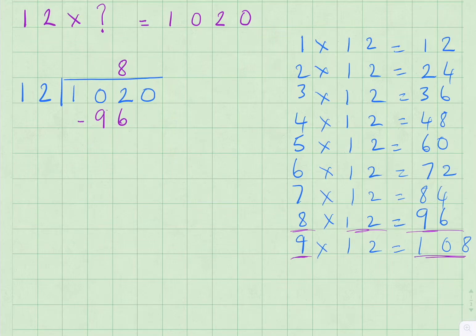So we now need to take 96 away from 102 to find out what's left over when you've put 8 twelves into 102. 2 take away 6 we can't do. And we can't borrow a 10 from the tens place because there is no 10, so we need to take it from the hundreds.